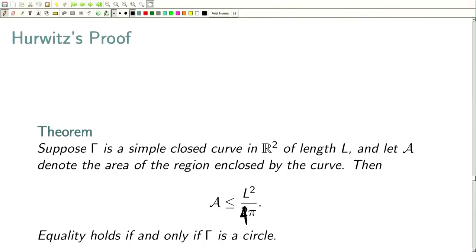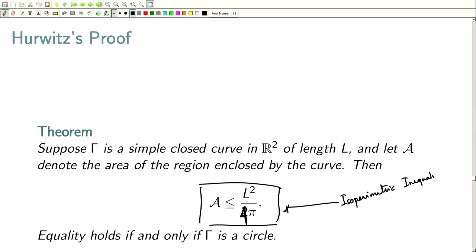Welcome. We are discussing the isoperimetric problem from the last lecture. The statement we wanted to prove is that if we take a simple closed curve of class C1 with fixed arc length, then among all such curves, the circle has the maximum area. In other words, if L is the length, then the isoperimetric inequality holds: A ≤ L²/4π. This inequality is called the isoperimetric inequality, and equality holds if and only if gamma is a circle.